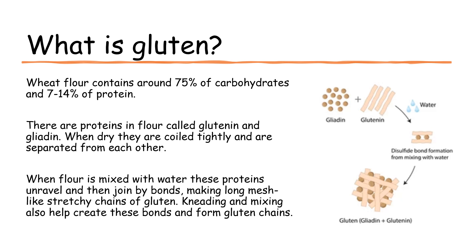Wheat flour contains around 75% carbohydrates and between 7–14% protein. There are proteins in flour called glutenin and gliadin. When dry, they are coiled tightly and separated from each other. When flour is mixed with water, these proteins unravel and then join by bonds, making long mesh-like stretchy chains of gluten.